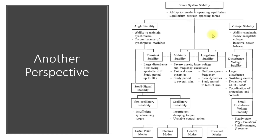Small angle stability can be further subdivided into two types: non-oscillatory and oscillatory. Non-oscillatory means the system will oscillate for a certain time and then slowly reduce its oscillation — a damped oscillation that takes a longer time to die down. Oscillatory instability is where the system continuously swings like a sine wave. This happens because of insufficient damping torque; if there is not enough damping torque, the system cannot reduce the oscillations.